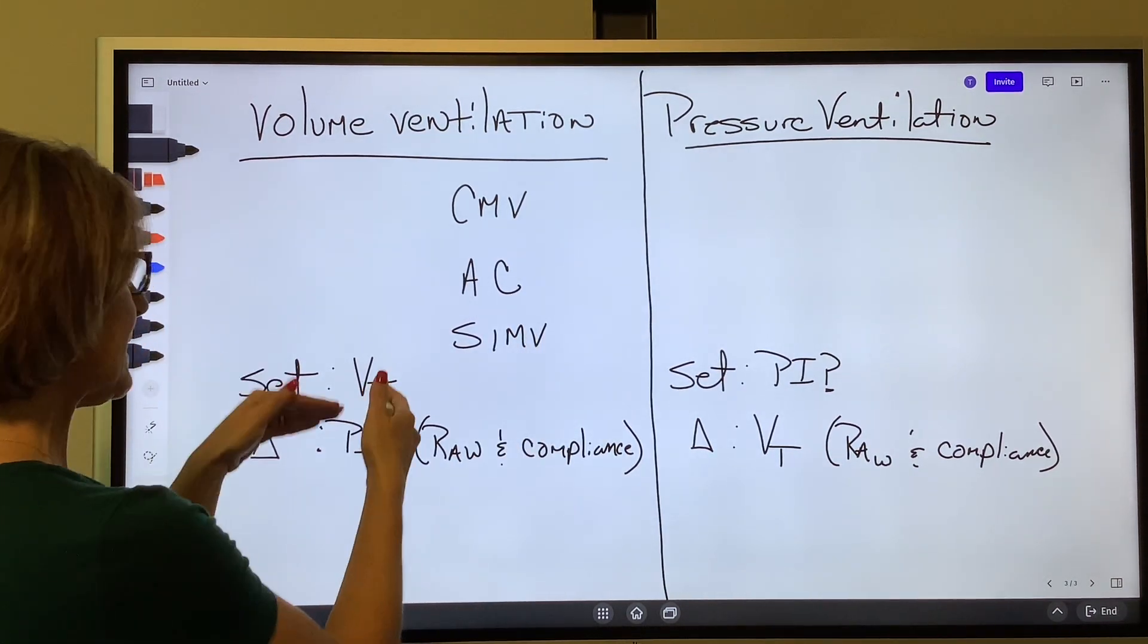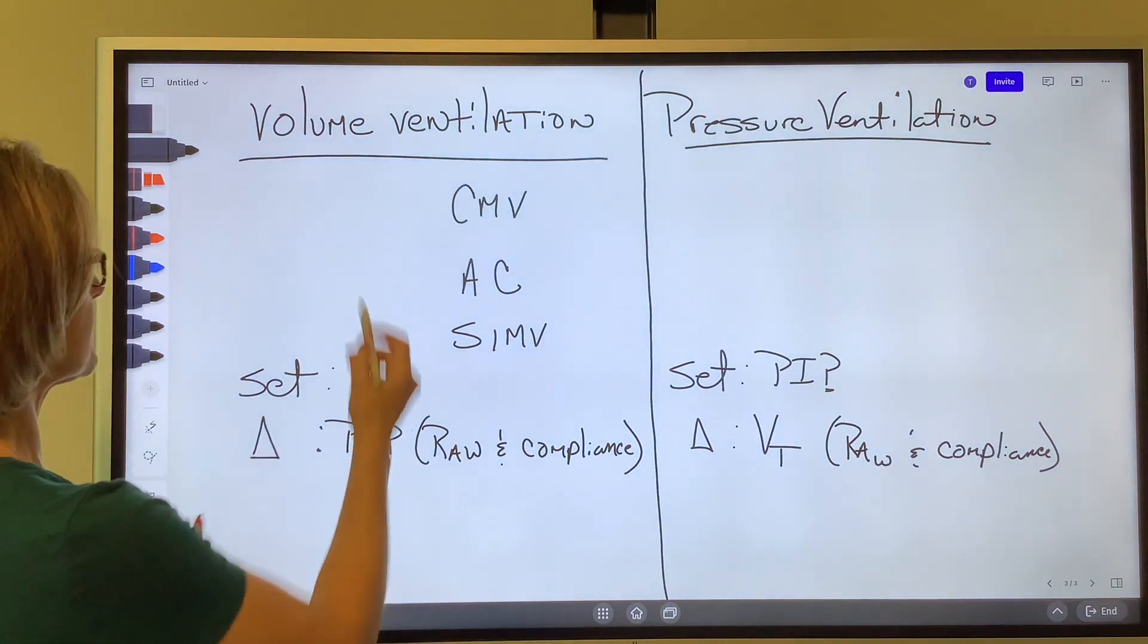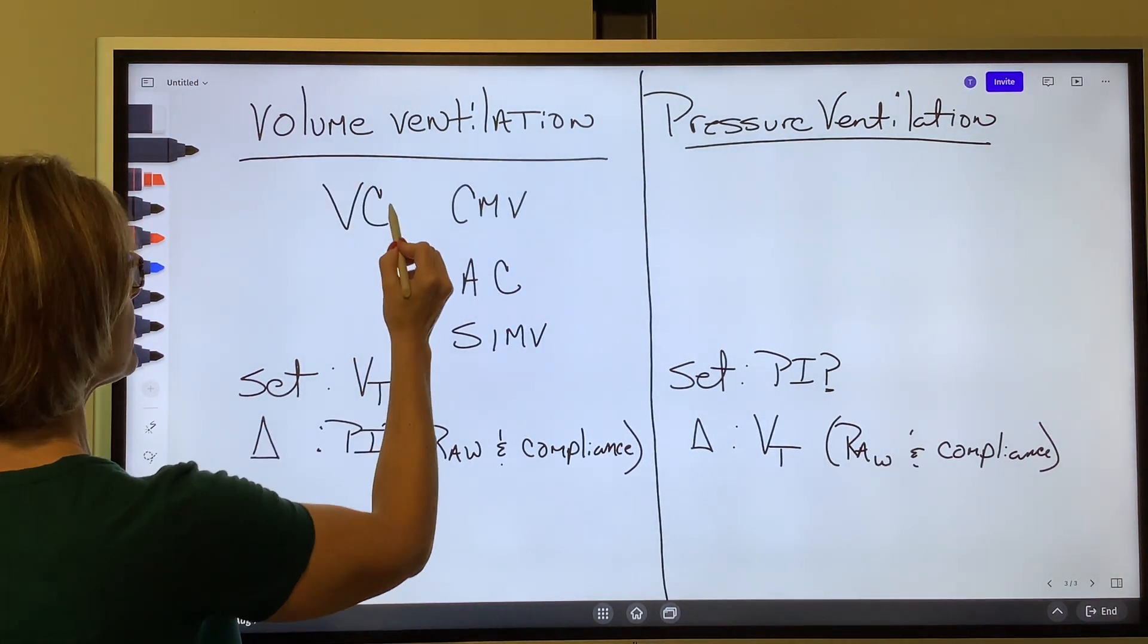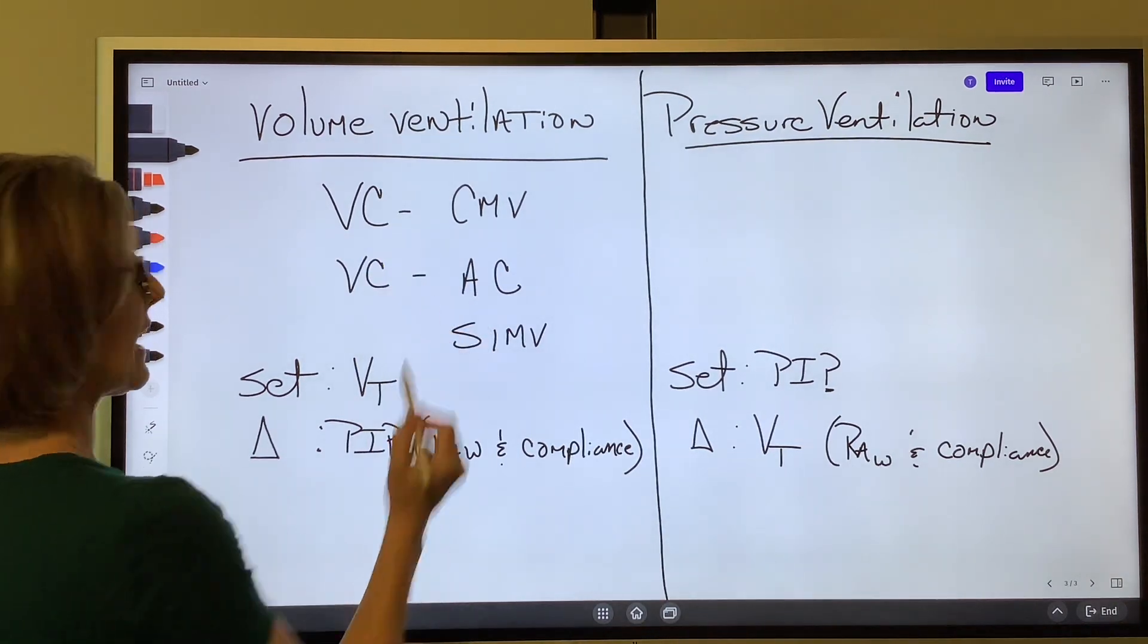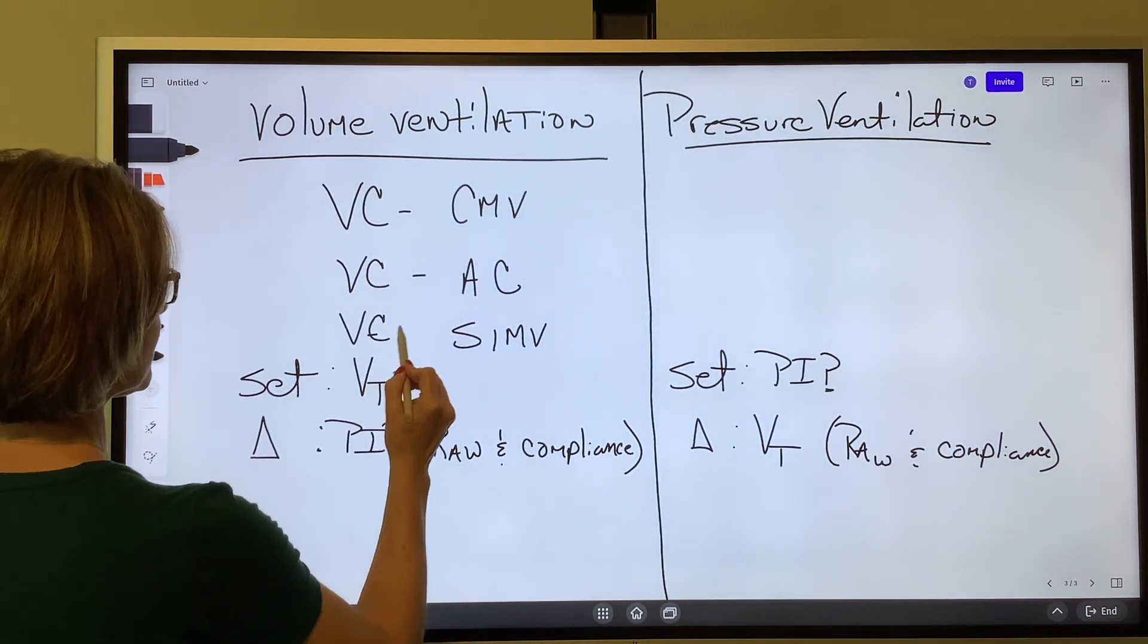Well, when we set the tidal volume, that tidal volume doesn't change. So we call this volume VC CMV, VC AC, and VC SIMV.